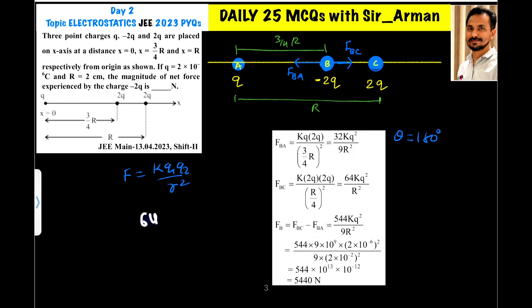So it is (64 - 32/9) × kq²/r². I have taken kq²/r² common. Now you just multiply, 64 × 9, I am taking LCM or cross multiplication, minus 32, divided by 9. If you solve this you will get 544kq²/9r².